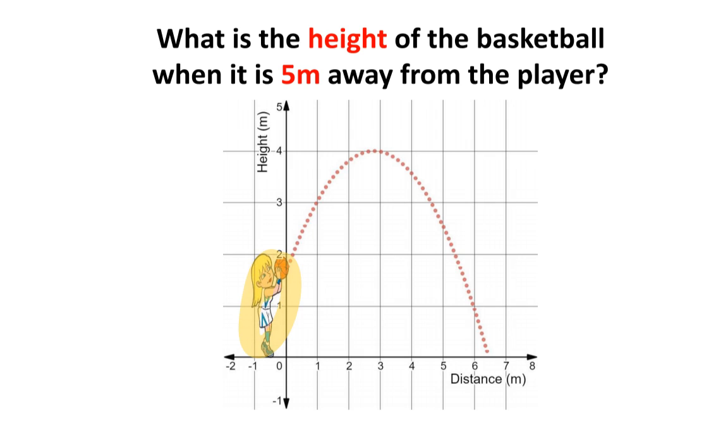In this situation, we have a basketball player shooting a basketball. On the x-axis is distance, while on the y-axis is height. We want to know what is the height of the basketball when it is 5 meters away from the player.